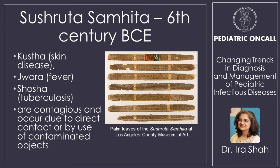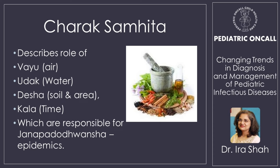In sixth century BC, India was in its golden period. We had Ayurvedacharyas who were the scientists of those times — they were doing plastic surgeries and treating infectious diseases. Sushruta himself said that skin disease, fever, and TB are contagious and occur due to direct contact or by use of contaminated objects. He knew that 2,000 years ago. The Sushrut Samhita is now in the Los Angeles Museum, having come from Nepal. Charaka described the role of Vayu, Udak, Desh, and Kal as responsible for epidemics.